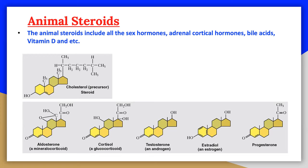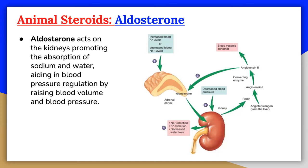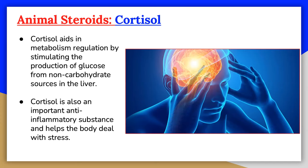Aldosterone is a hormone produced in the outer section of the adrenal glands, which sit above the kidneys. Often called the salt-retaining hormone, it plays a central role in the regulation of blood pressure, mainly by acting on the kidneys and large intestine to increase the amount of salt reabsorbed into the bloodstream and to increase the amount of potassium excreted in the urine. Aldosterone acts on the kidneys, promoting the absorption of sodium and water, which increases blood volume and therefore blood pressure.